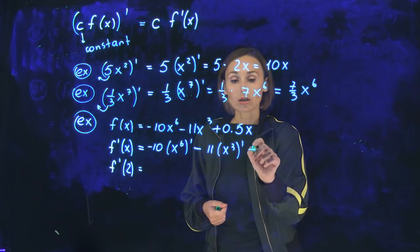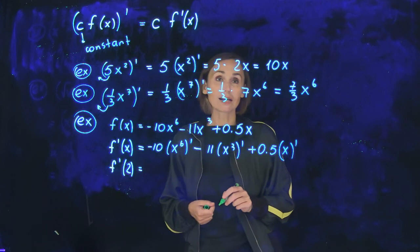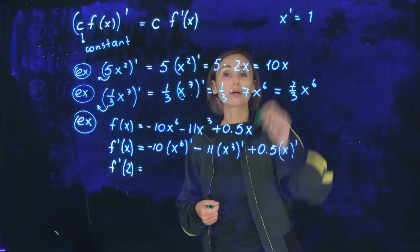Then you need to differentiate 0.5x. So it's going to be 0.5 outside. And you need to differentiate x. Derivative of x is 1, x prime is 1. This is prime, this is derivative notation.